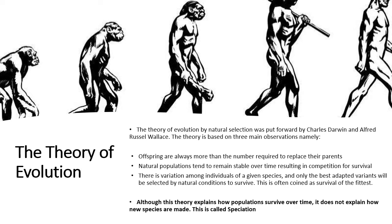The theory of evolution tells us how populations survive over time and how they evolve into different kinds of populations. But it doesn't tell us how new species are made — and that is a process called speciation. So before we discuss speciation, which refers to the development of new species, we need to first define what a species is.